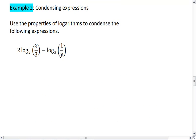For this first one, whenever you're condensing you want to make sure you have the same base, which we do. We can pull coefficients up as exponents. We get log base 3 of x over 3 squared minus log base 3 of 1 over y.